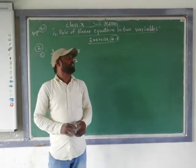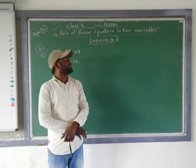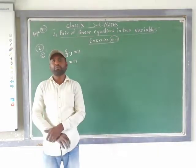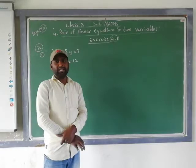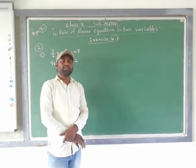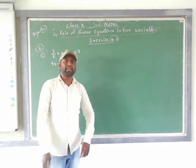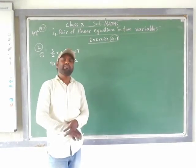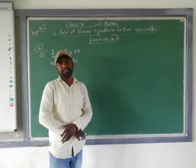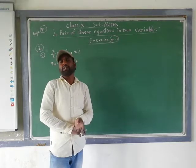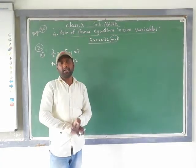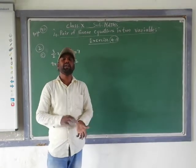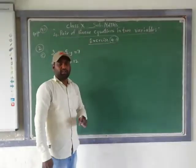Yesterday we discussed Chapter 4 on pair of linear equations in two variables, and started Exercise 4.1. In the first bit, I explained how to identify — by taking two line equations — whether the lines are intersecting, coinciding, or parallel, by comparing the ratios a1/a2, b1/b2, and c1/c2, to determine whether the given lines are consistent, inconsistent, or dependent and consistent.